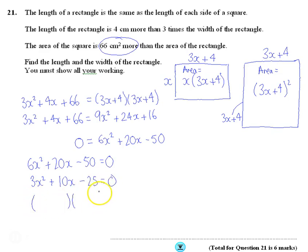And then I'm going to set up a set of double brackets. I know it's going to start 3x and x. It's the only way to get 3x squared. I'm going to make 25, so it's probably 5 and 5. 1 plus 1 minus. I'm going to make 10x. So if I add a 5 in here, this and this will give me 15x. A minus 5 in here. When I take a 5x off, it's going to give me 10x. So therefore, my solutions are 3x minus 5 equals 0.